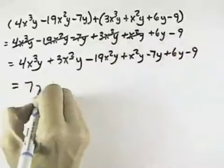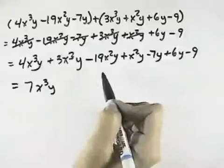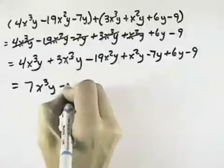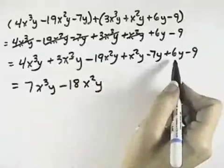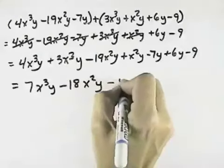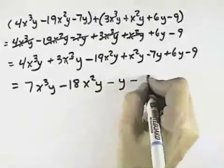So combining like terms, 4 and 3 will give us 7 of the terms that are x cubed y. A minus 19 and a plus 1 will be minus 18 of the terms x squared y. Minus 7 plus 6 is minus 1 y. And then our last constant, minus 9.